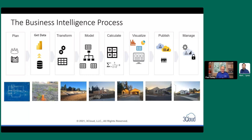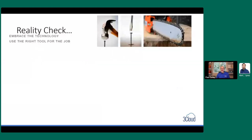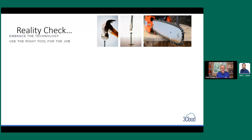So a reality check — super important. Embrace the technology you're using, understand what it was intended and designed for. Use the right tool for the job. Going back to my construction analogy, you're not going to hammer in a nail with a screwdriver. You're certainly not going to do any of those things with a chainsaw, but you really can't cut down a tree with a screwdriver either. Understanding the tools we're working with, and the needs you have and tools that might be most efficient to provide for those needs, is very important.